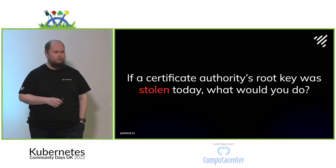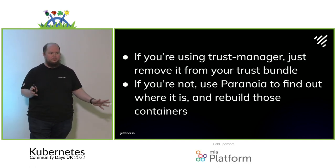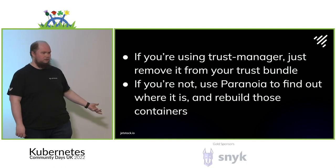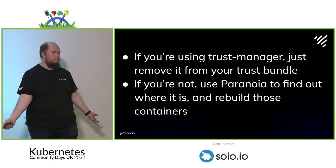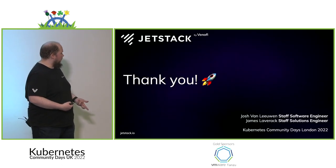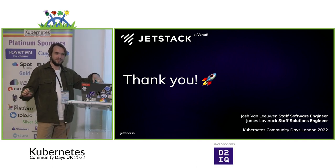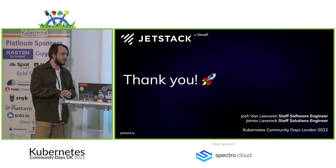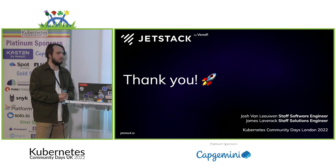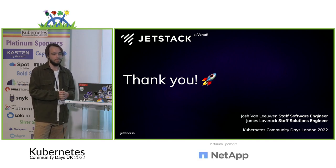Back to the beginning: if a certificate authority's root key was stolen today, what would you do? Well, if you're using Trust Manager, things are pretty simple — you just remove it from the Trust Manager distributed bundle and everything automatically updates as if by magic. If you're not using that — and it is pretty alpha at this point — using a tool like Paranoia, you can understand where these certs are and therefore begin to understand what images you need to rebuild, even if it's just a case of kicking off the pipeline again to get updated CA certificates. Trust distribution in the cloud-native space is not the most well-thought-about problem. It will take a lot of people smarter than us to help pay more attention to it and solve some of these problems.